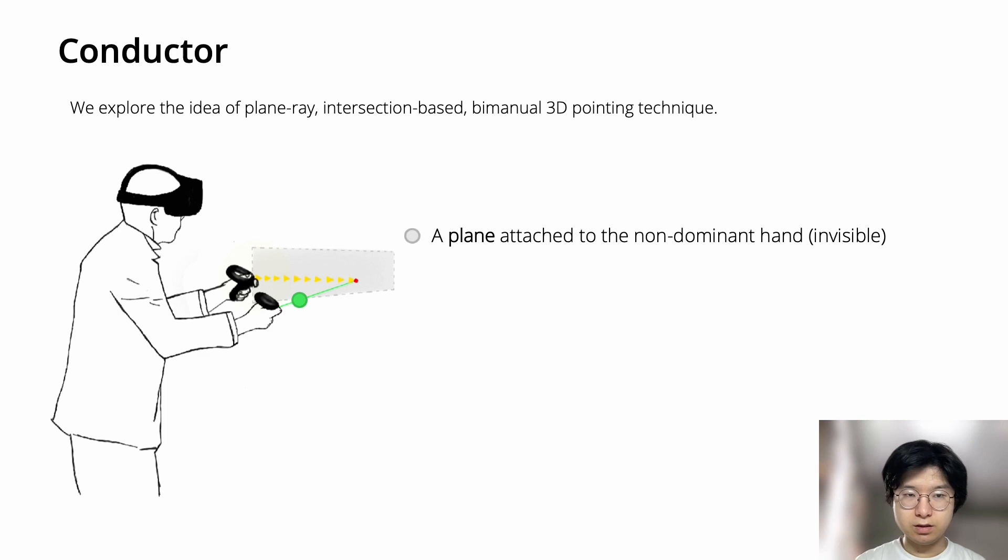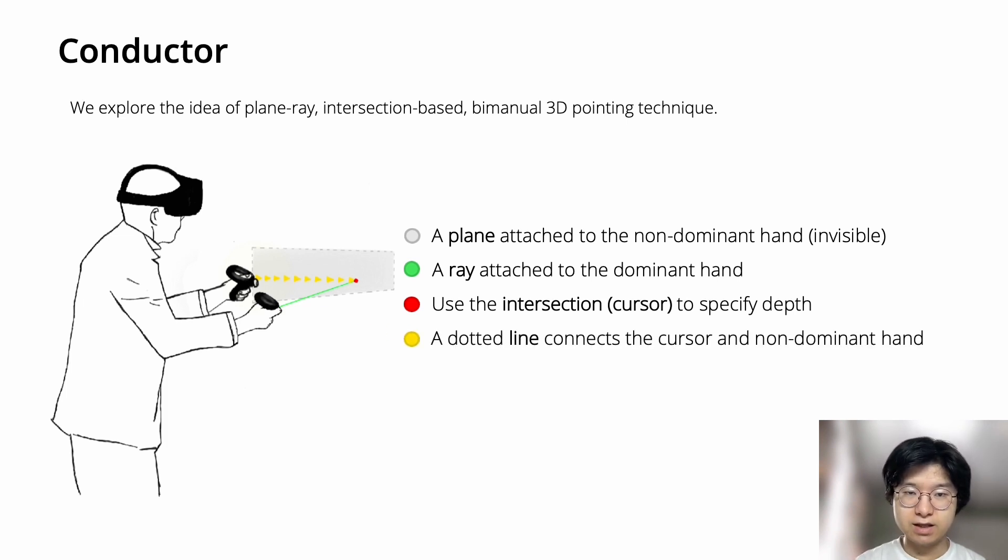There is a ray attached to the dominant hand, and the intersection of the plane and the ray is used to specify the depth of the ray. We also have this dotted line connecting the cursor and the non-dominant hand to provide visual feedback for users.